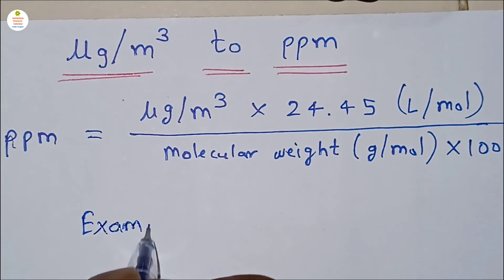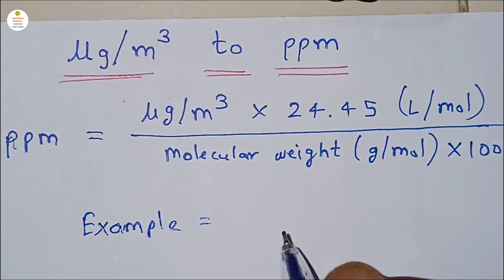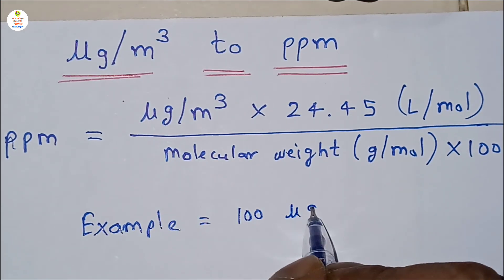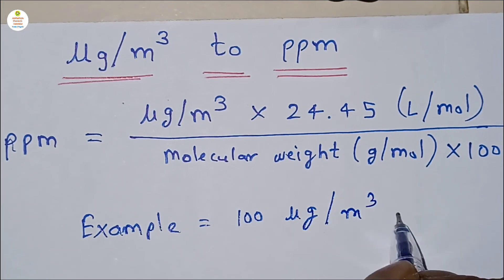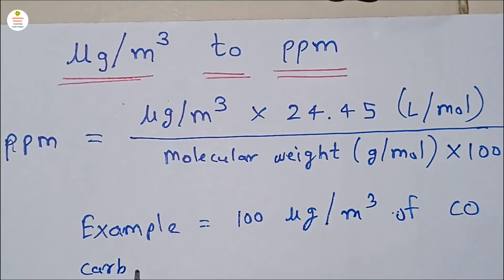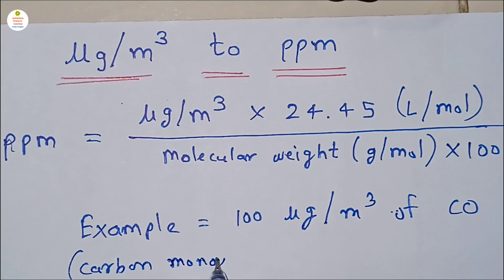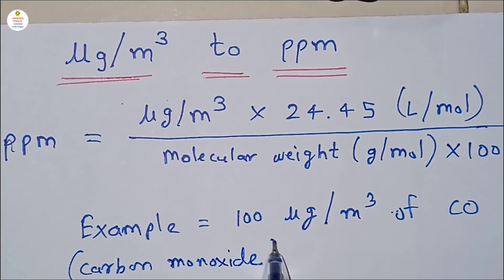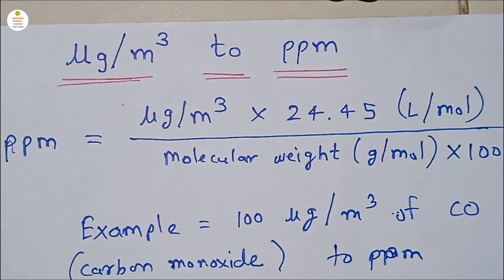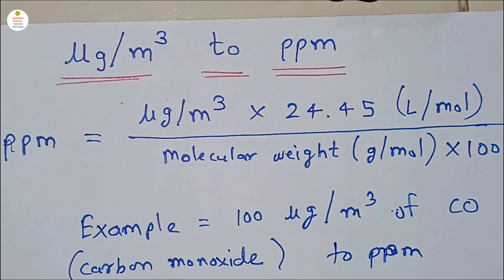Now let's see here example. We will see the example of, let's see, suppose 100 microgram per meter cube of CO, that is carbon monoxide, we need to convert this value into ppm.